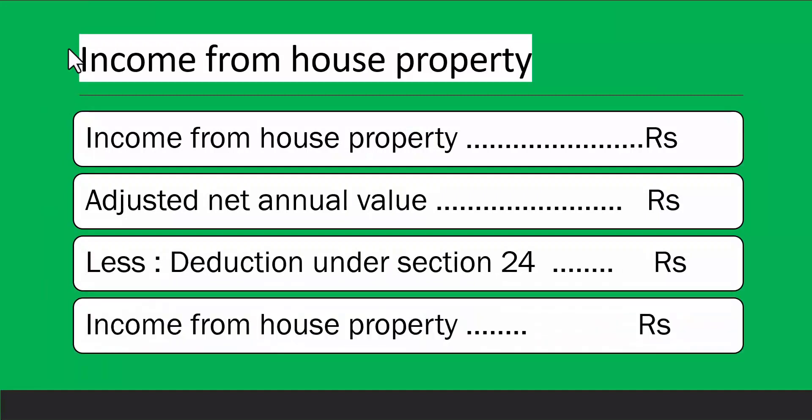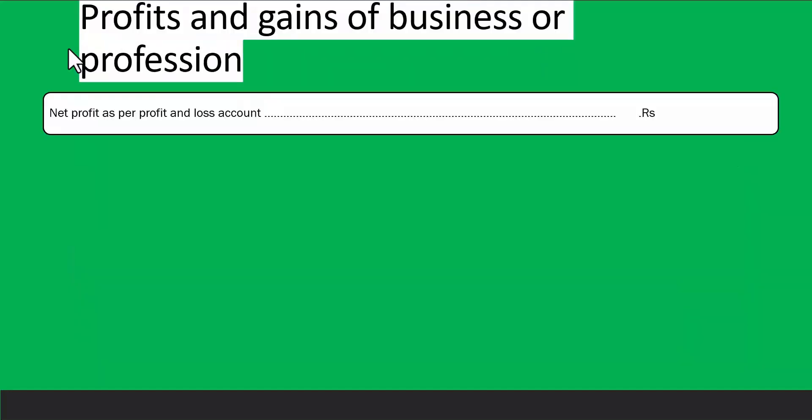For income from house property, if you are receiving rent, you are allowed certain deductions, and after applying those deductions you arrive at your income from house property on which you are supposed to pay tax. There are specific rules which will be covered later.